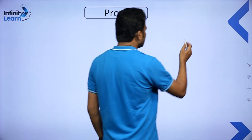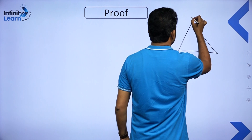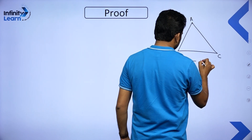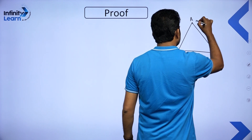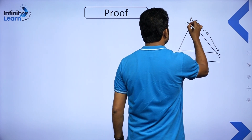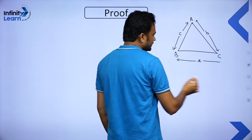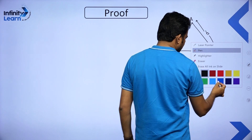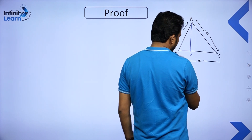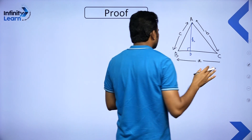Let me draw triangle ABC again. The measurement of side BC is A, side AC is B, and side AB is C. Since altitude is not given, I will do a construction — I will draw the altitude from A to BC. Let us call this altitude AD, with measurement H. So AD = H.